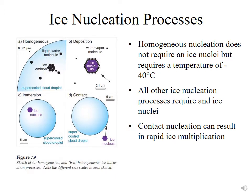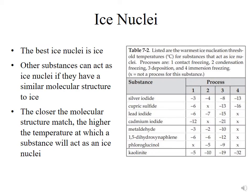The best ice nucleus in the world happens to be an ice crystal, but there are other particles in the atmosphere that can act as ice nuclei at temperatures colder than zero degrees Celsius. The best ice nuclei is ice, but other substances can act as ice nuclei if they have a similar molecular structure to ice. Table 7.2 from the Stull textbook shows some of the species that have been identified as acting as ice nuclei in the atmosphere.